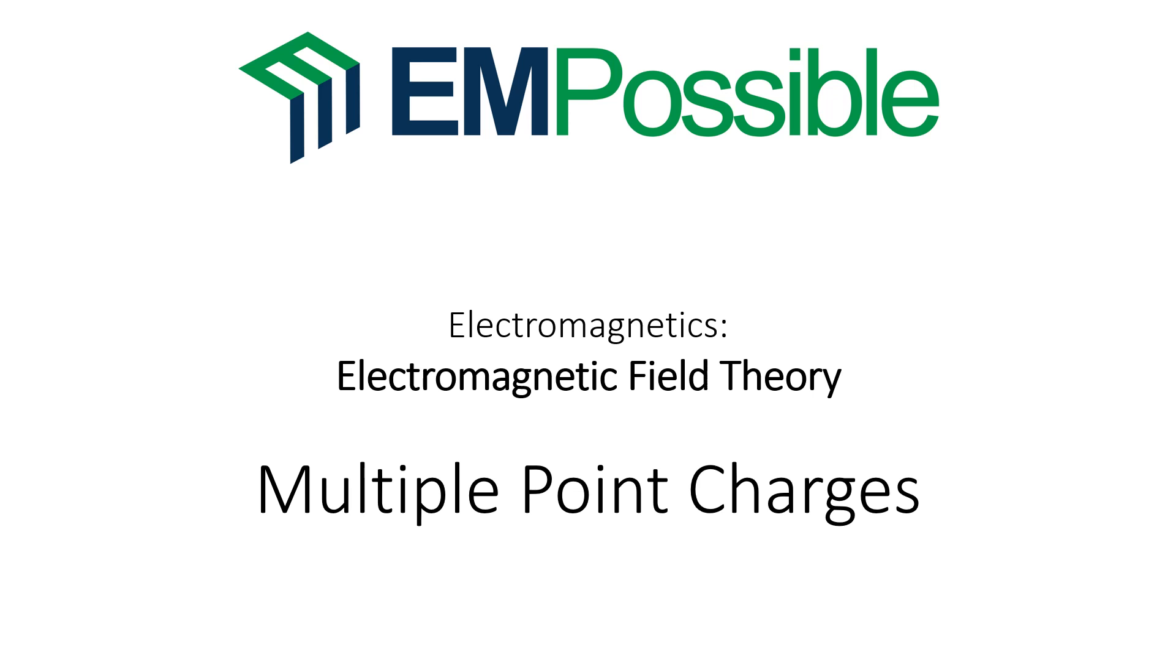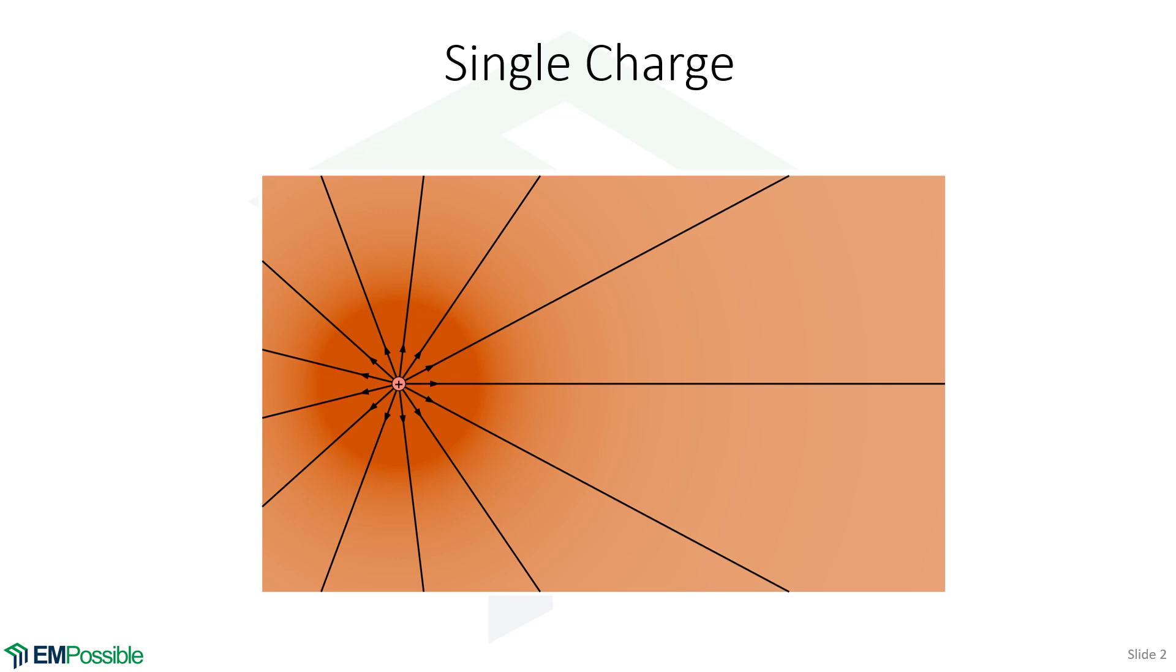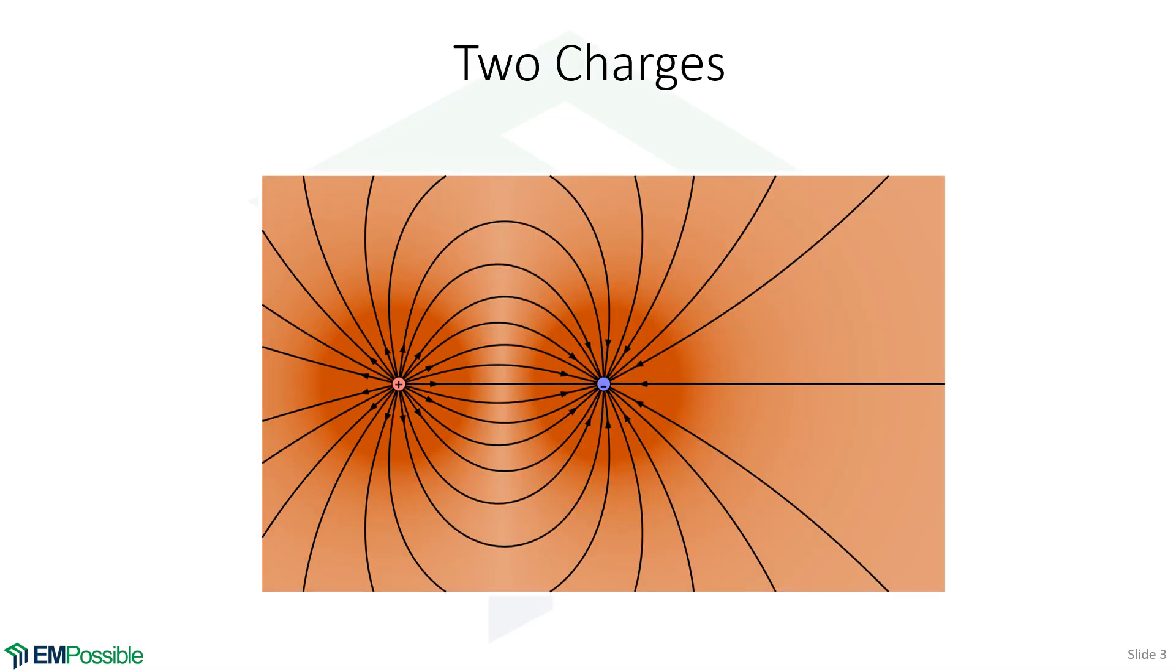By now, we're pretty used to seeing the field around a single point charge. Remember, it's more like a cloud or fog, but we draw these field lines and they diverge from positive charges. We also drew what happens when there's a second charge and the field lines begin on positive charges and end on negative charges, forming lines with fringing. Well, what if there's more than two?